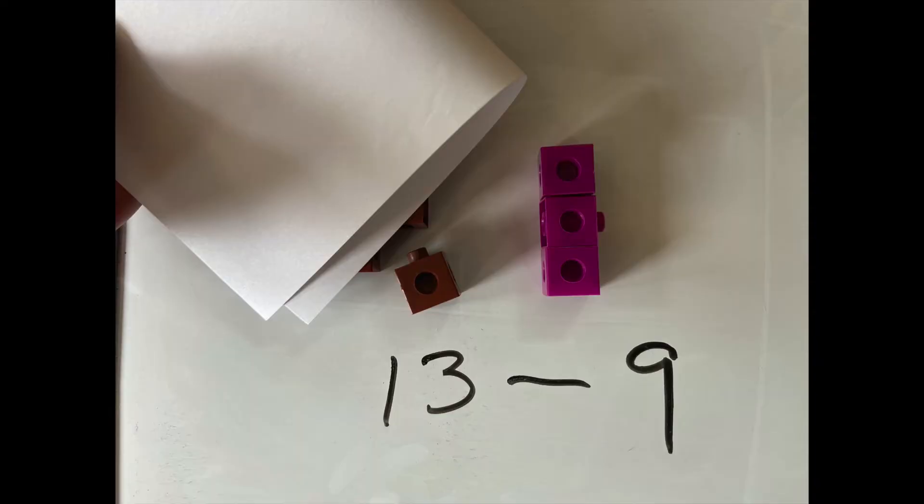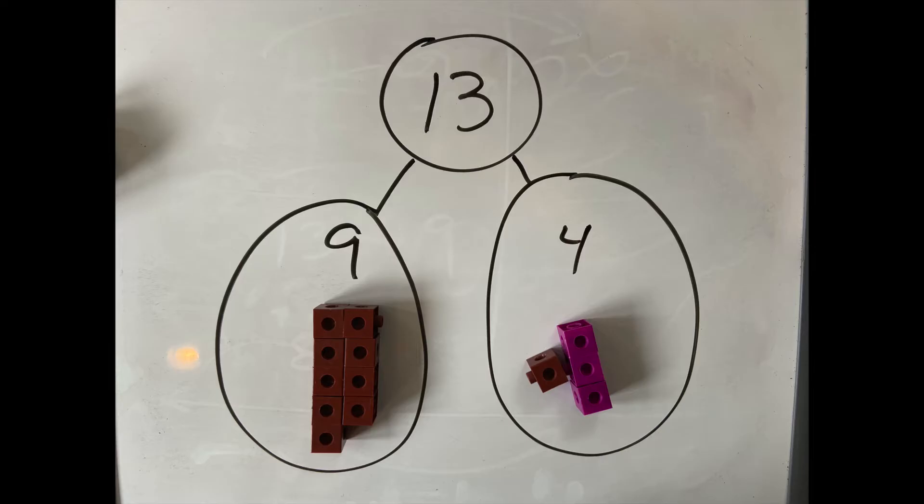Another approach here — and actually a subtle but different and important approach — is to build and cover. So build 13, cover 9, how many are left. That's a really nice approach to remember that you don't always have to take them fully away. In a way, they're sort of still there, and really the 13 is just being broken into two pieces. Either one of the pieces can be covered or taken away, and the other one is what we're curious about.